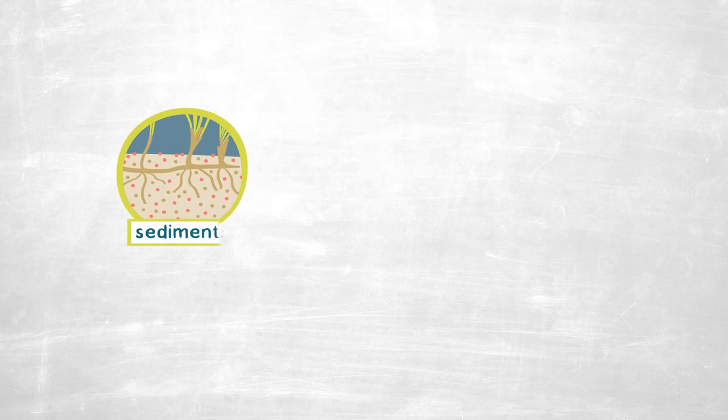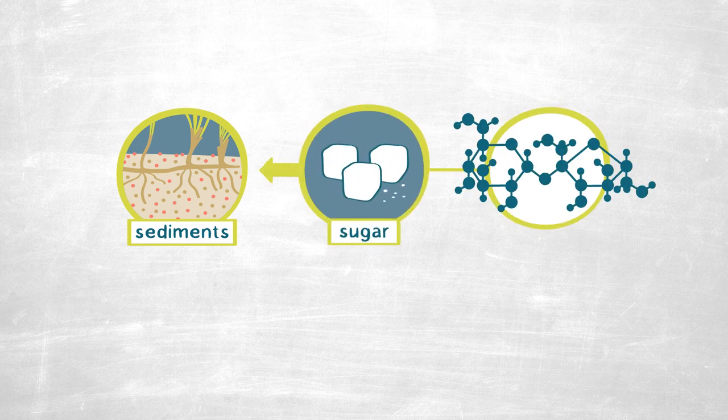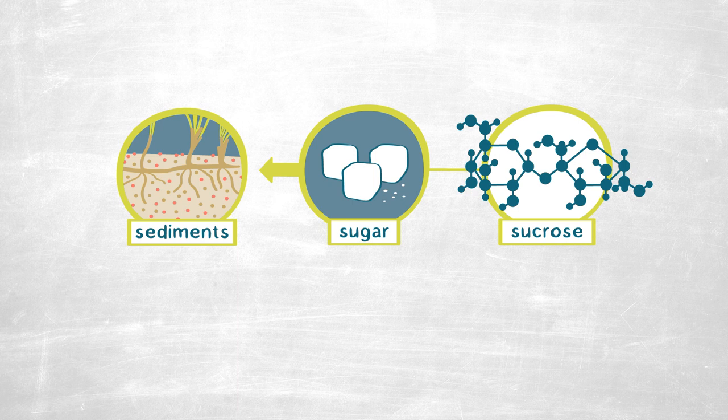The first thing we found when exploring the metabolites occurring underneath these seagrass meadows worldwide was that there's a lot of sugar present there, specifically in the form of sucrose. Having high concentrations of sucrose at micromolar levels is quite unusual in the environment, because microorganisms like to eat sugar — it's something we even put in our coffee — and microorganisms across different environments will use it regularly and rapidly in their metabolism.